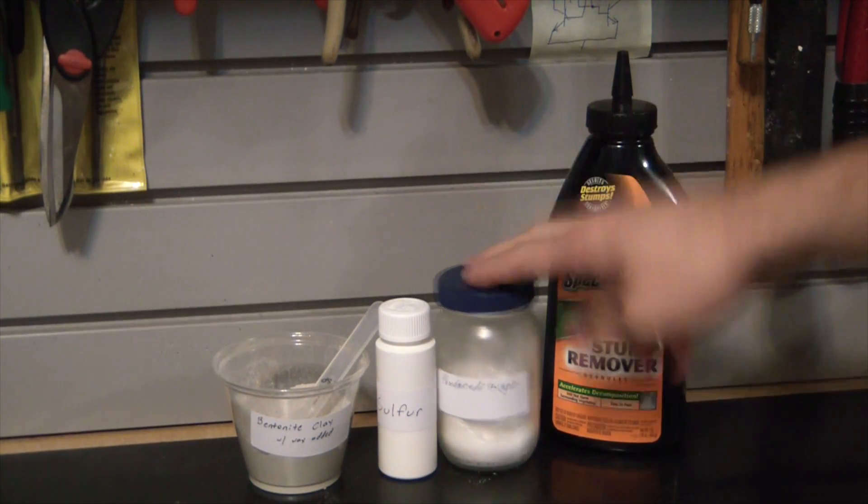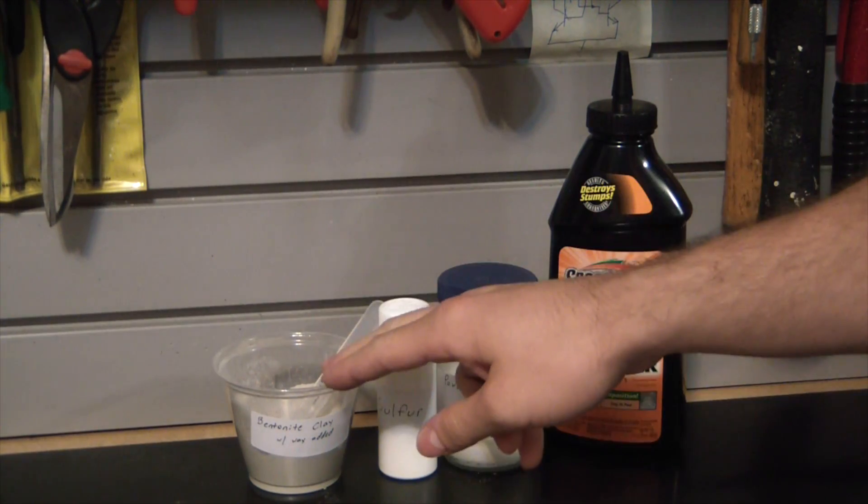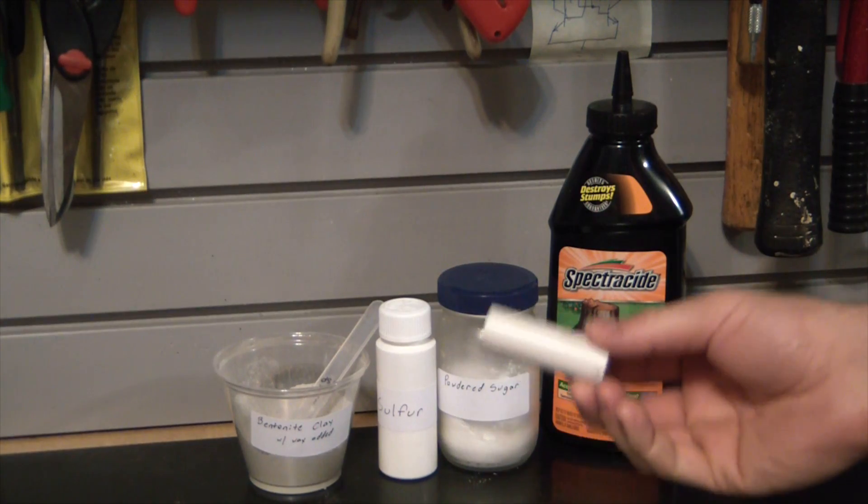Today we're going to turn stump remover, powdered sugar, sulfur, and a little bit of kitty litter into working rocket engines.